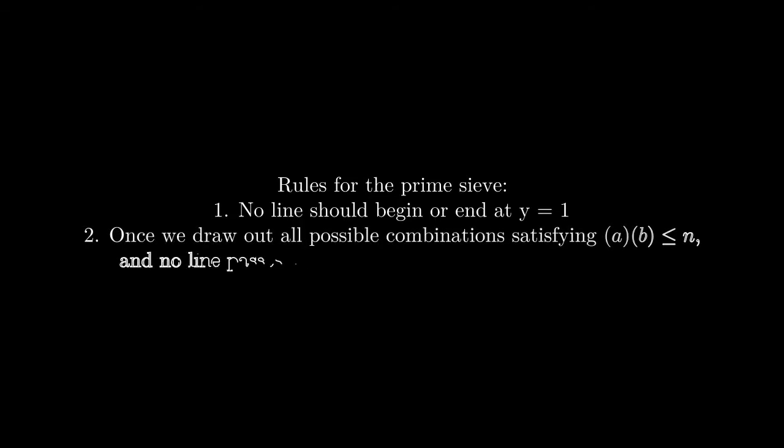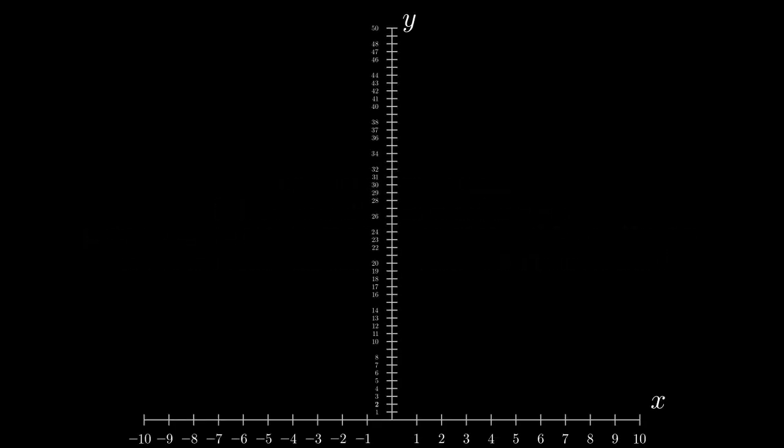So here are the rules for the prime sieve. First one is that no line should begin or end at y equals 1 because all numbers are divisible by 1 including primes. Additionally, once you draw out all multiples less than n and no line passes through y equals n, then n is a prime number. Using those two rules, we make the following graph.